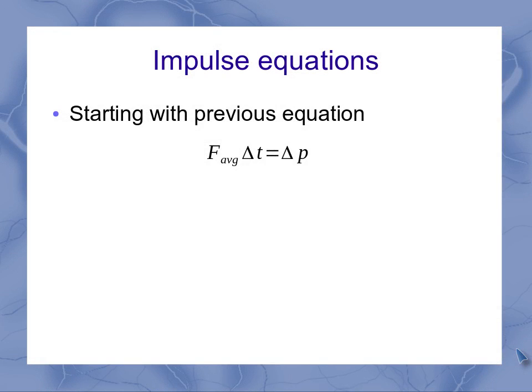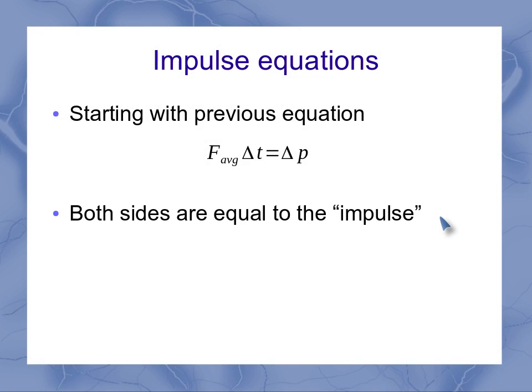So now we come back to impulse, and we're starting with this equation we just had. And we're now going to define impulse as being equal to both sides of this equation. So that means first that impulse is equal to that average force applied over a time span, and then the impulse is equal to the change in momentum.